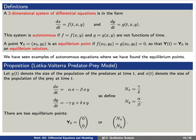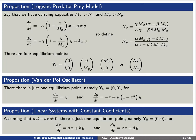We've seen that this system has exactly two equilibrium points. As a generalization, we can consider the logistic predator-prey model. This is just a predator-prey model but we also include a carrying capacity. The carrying capacities might be m-sub-x corresponding to variable x and m-sub-y corresponding to variable y. We found in this case that there are exactly four equilibrium points.